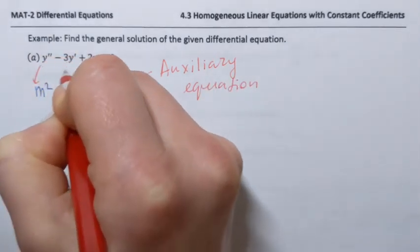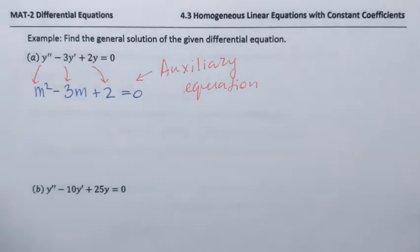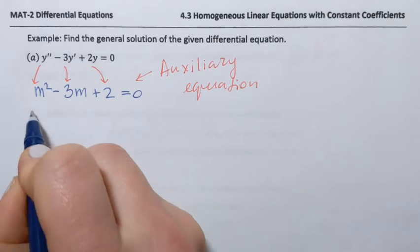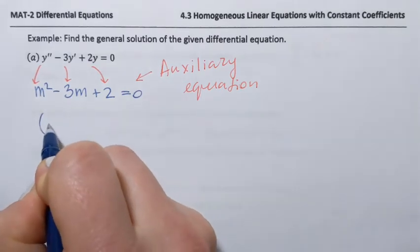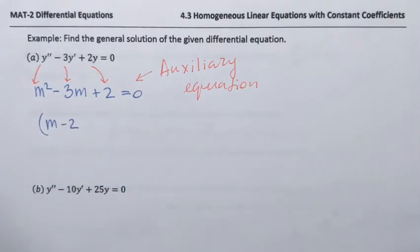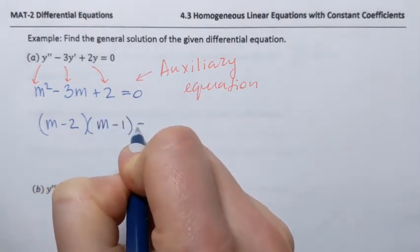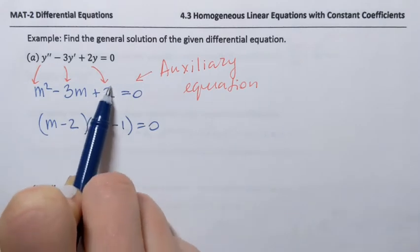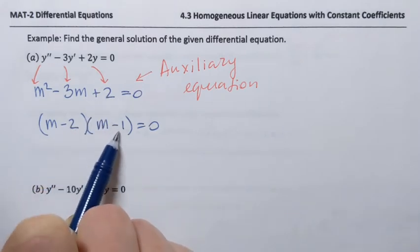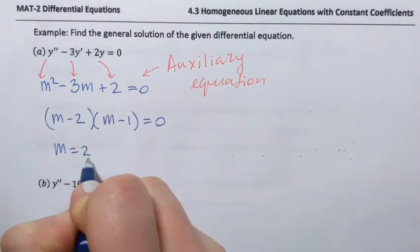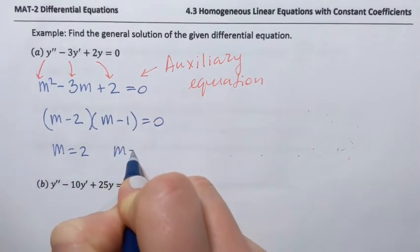That's where we're taking the coefficients from. We just need to solve this quadratic equation. In some cases it's quicker and easier if we can factor, which is the case here. That can be factored as m minus 2 times m minus 1 equals 0. Negative 2 times negative 1 is positive 2, and negative 2 plus negative 1 is negative 3. So from here, m equals 2 and m equals 1.